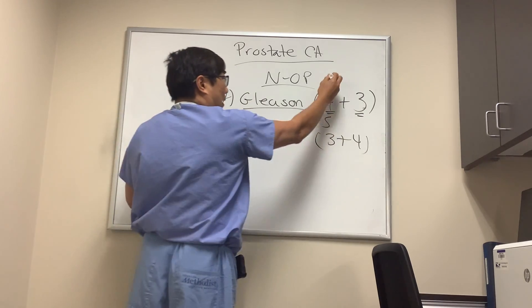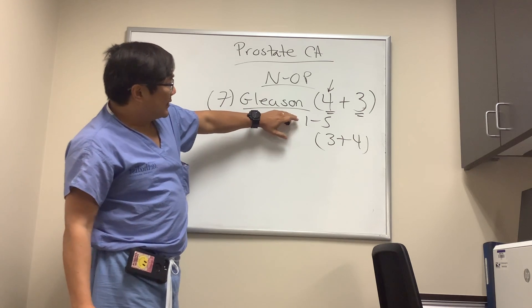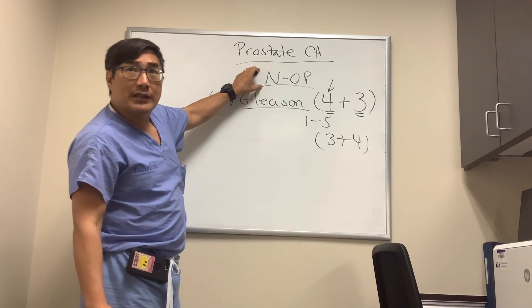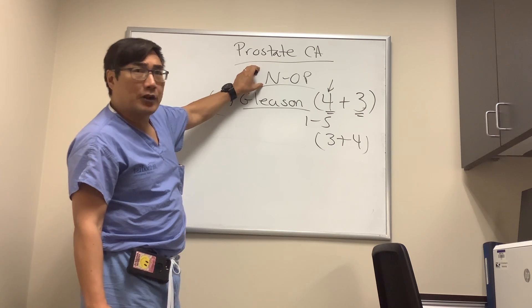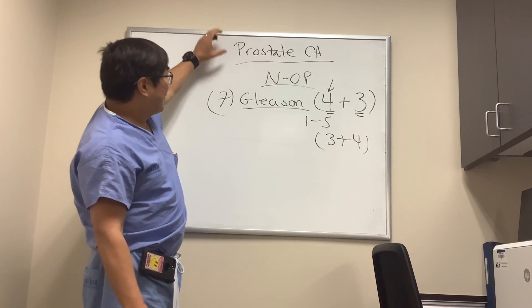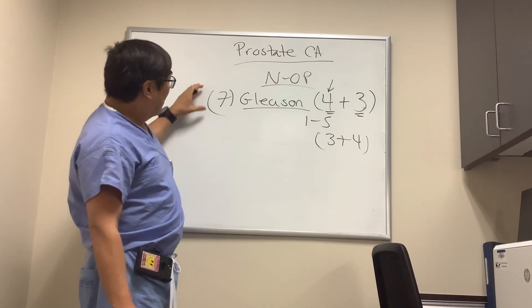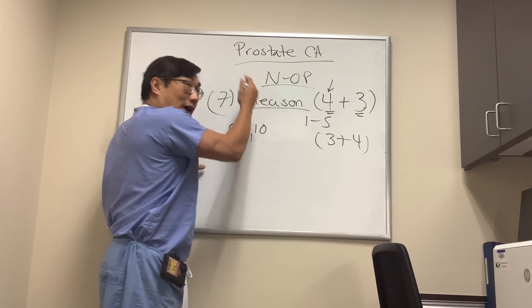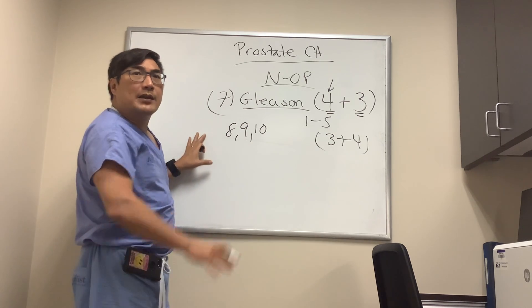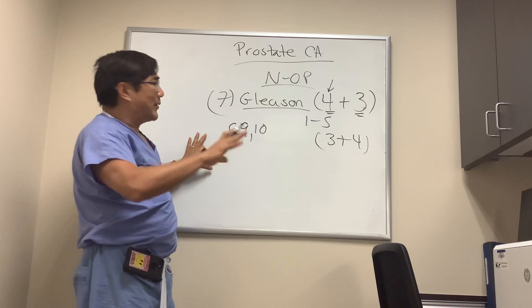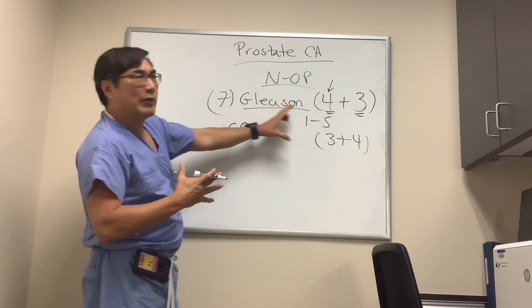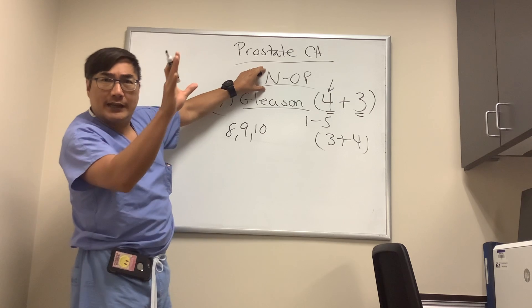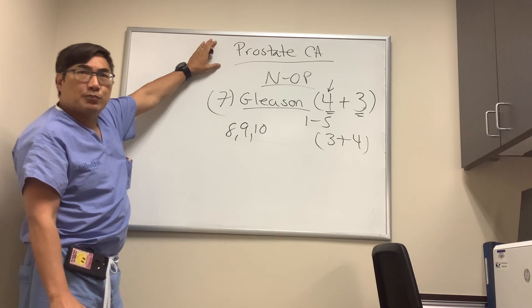The higher the Gleason score, the more likely a patient's neuro-op presentation — whether it's Horner syndrome, optic neuropathy, diplopia, or proptosis — is related to their prostate cancer. If the Gleason is eight, nine, or ten, it's probably related. A Gleason of seven still warrants workup. If the Gleason is less than six, it's probably not related. The key takeaway is risk stratification, not memorizing the pathology of prostate cancer.